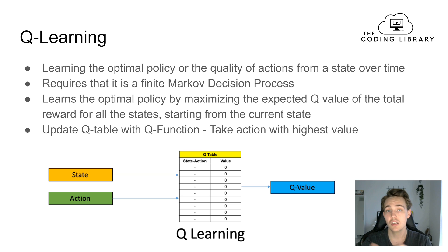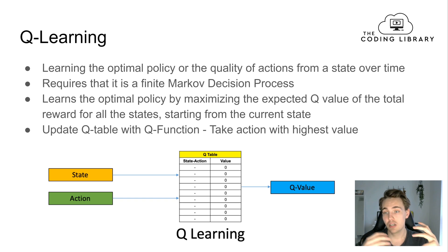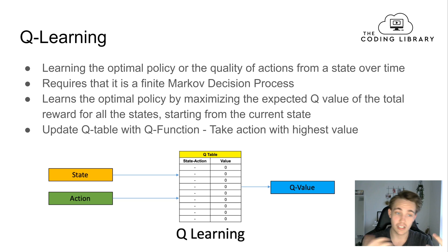The Markov property says that an action only depends on the given state we're in now and doesn't depend on any of the previous states. So we need to build all the relevant information from previous states into the current state to have this Markov property, which is required when we're talking about Q-learning in reinforcement learning.